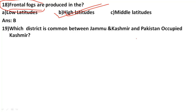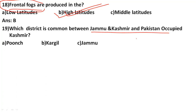Which district is common between Jammu & Kashmir and Pakistan-occupied Kashmir? The answer is Poonch district, which lies between Jammu & Kashmir and Pakistan-occupied Kashmir.